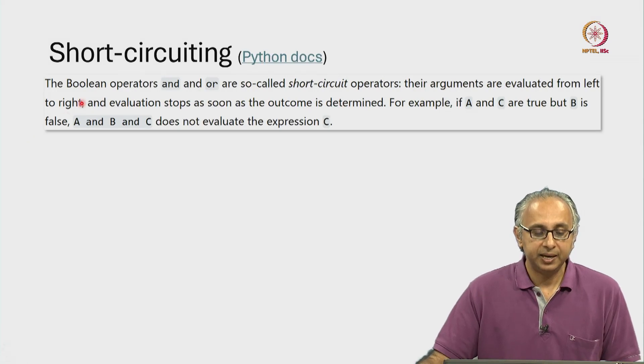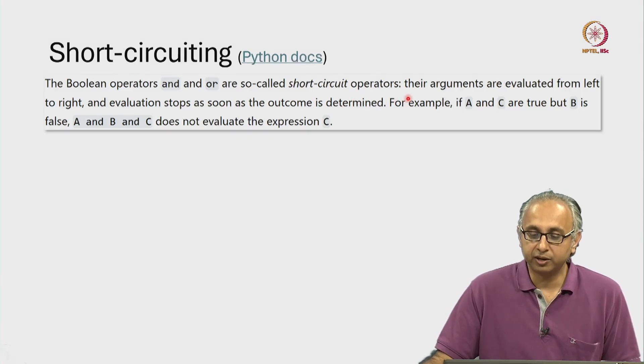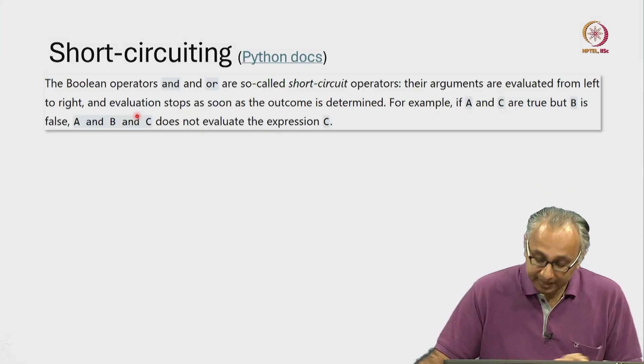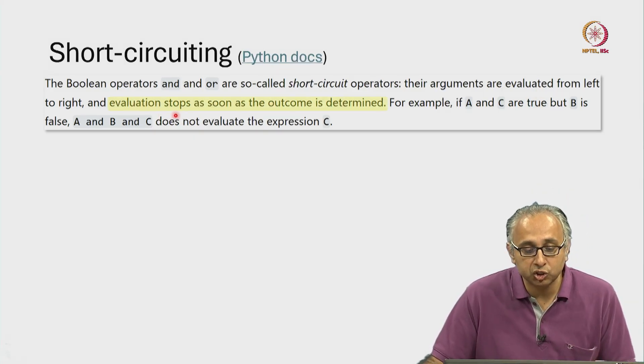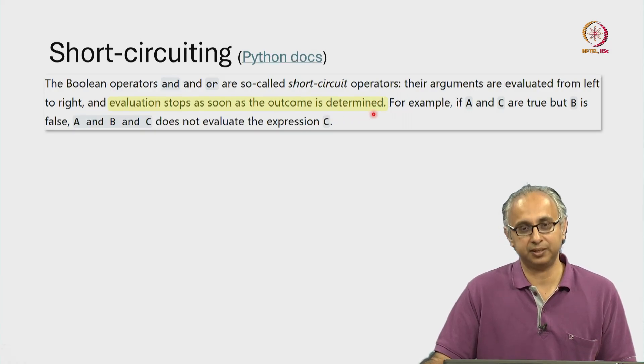This is called short circuiting, and here I am quoting from the Python documentation. It says the boolean operators AND and OR are so-called short circuit operators. Their arguments are evaluated from left to right.